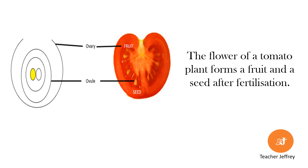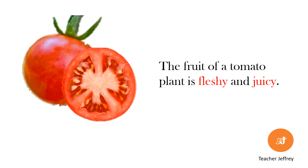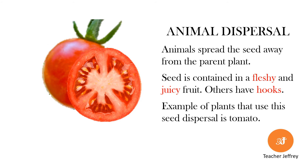In our topic on fertilization in plants, we used tomato fruit as an example formed after fertilization. Tomato as a fruit is fleshy and juicy. Animals eat the tomato, and together with it is the seed. When animals move to another place, the seed is spread to another location away from the parent plant. The formation of a fleshy and juicy fruit is an adaptation used by the tomato plant for its seed to be dispersed — this method is called animal dispersal.